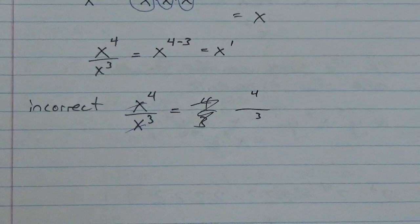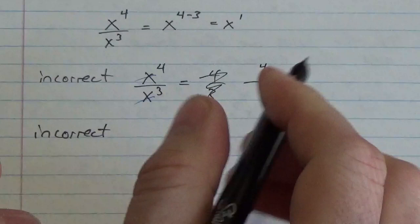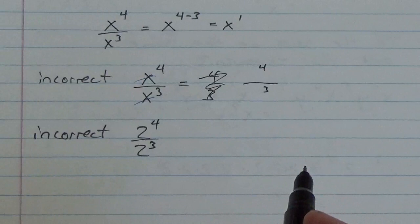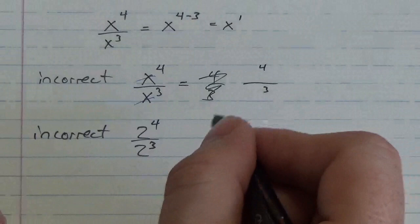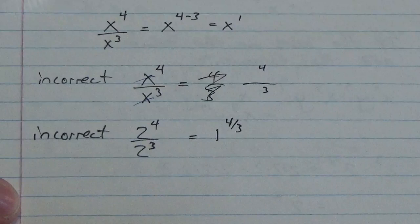Another thing that happens here, and this is also going to be incorrect and something to watch out for. Make sure you're not doing this. If I put a two in the base here. Okay. Sometimes what happens is, is people will cancel the twos, realizing, well, two divided by two is just one. And then do the exponent and make it like to the four divided by three. Or I've seen it to the four minus three.